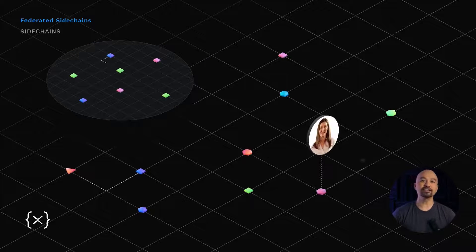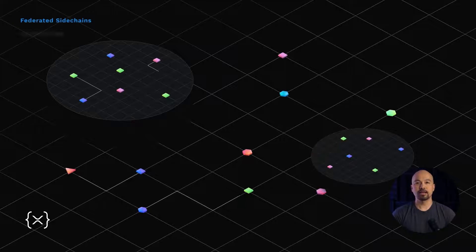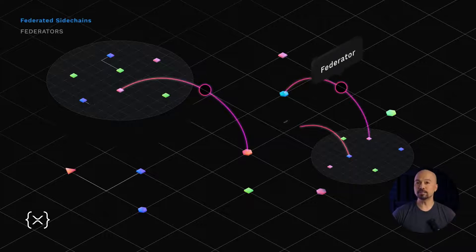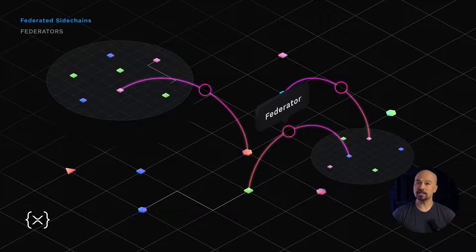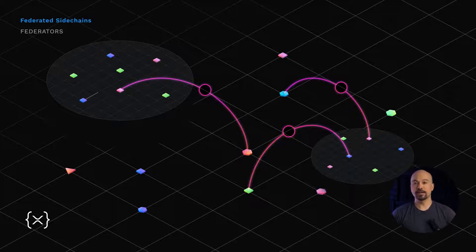Anyone can create and run a sidechain to the XRP Ledger. And what is a federator? That's the connection point that runs between a sidechain and the XRP Ledger, passing value from one chain to the other, creating interoperability between the two.